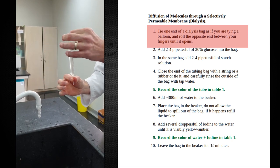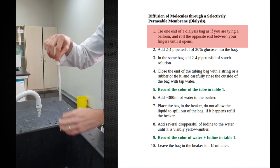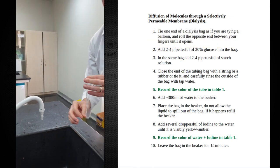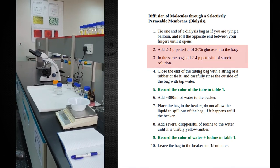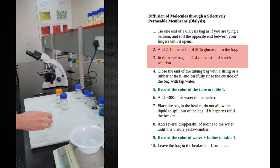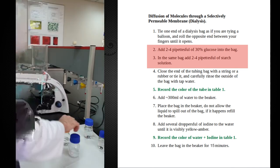So now that I've done this, I can pour this out and I have dialysis tubing that is ready to go. Now I'm going to go ahead and add our sample to this. Our sample today is going to be a mixture of starch and glucose.